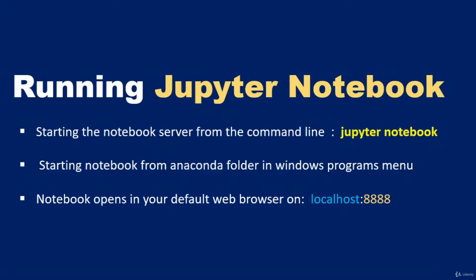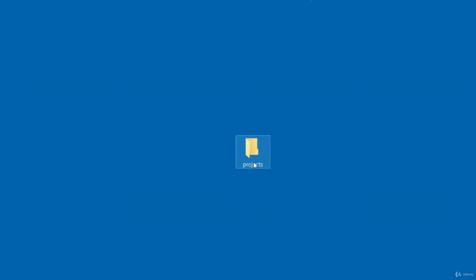I've shown you how to start the Jupyter Notebook server from the programs menu on a Windows-based computer, which opened up the console and also opened up the notebook in your web browser on localhost:8888. Now I'm going to show you how to start the Jupyter Notebook from the command line. Notice that when you start it from the Anaconda folder within All Programs, it starts from the root directory of your profile. When starting from the command line, you can specify where you want it to start from. I've got a project directory here — it's an empty directory — and I'm going to make the Jupyter Notebook start from this project directory.